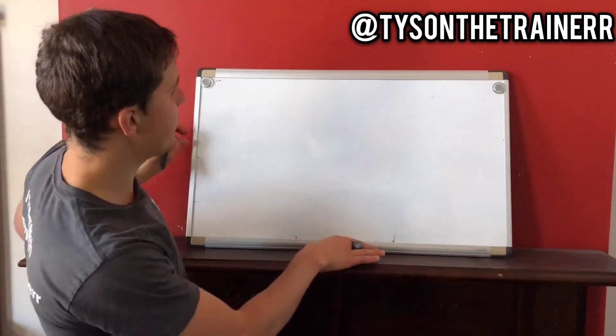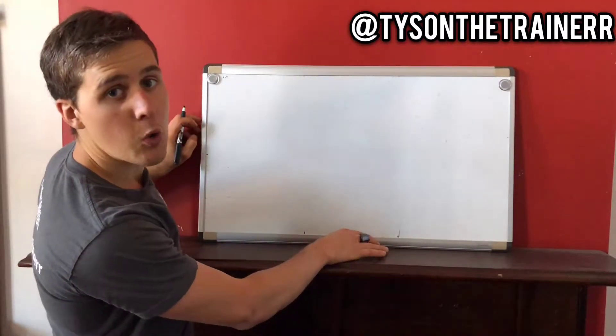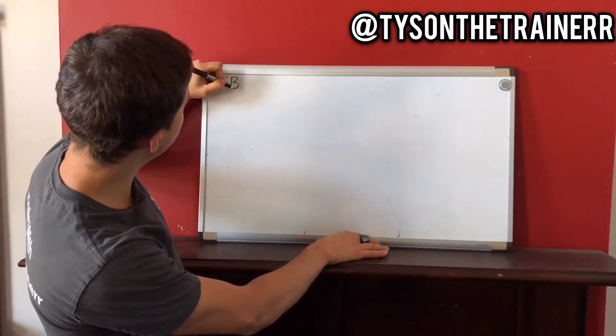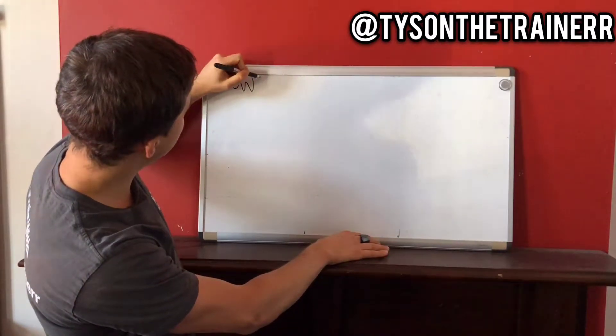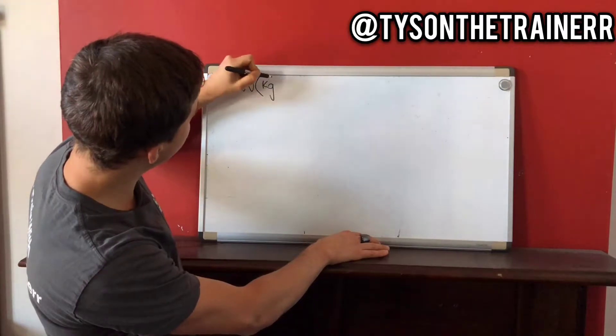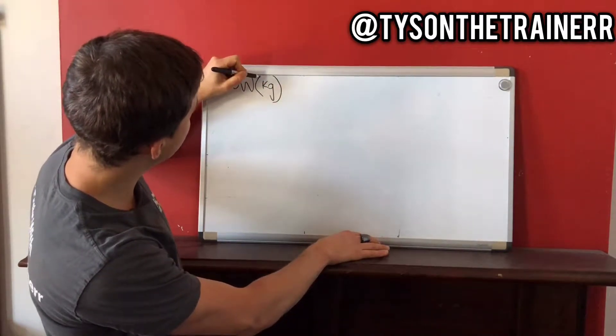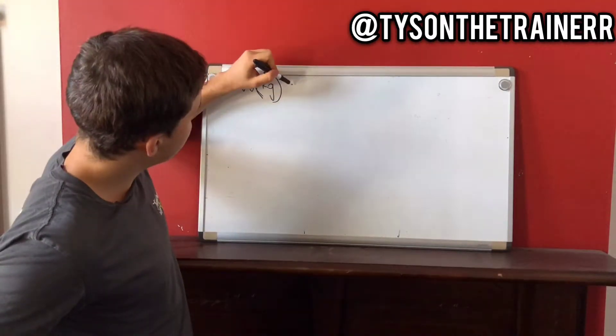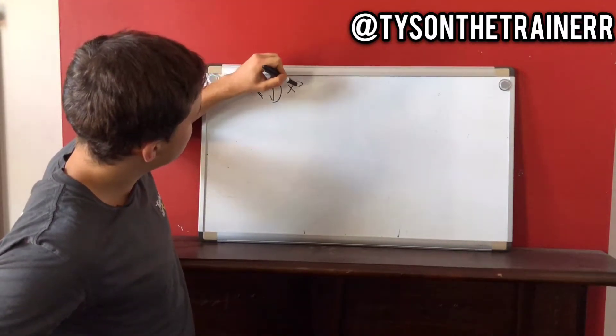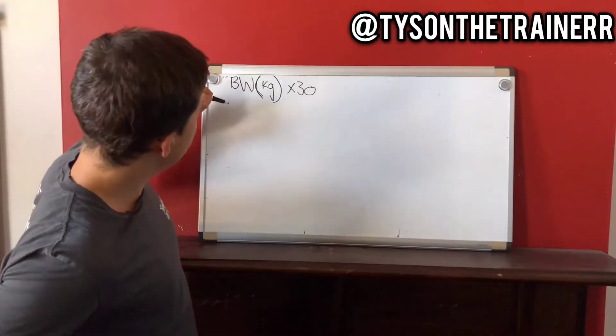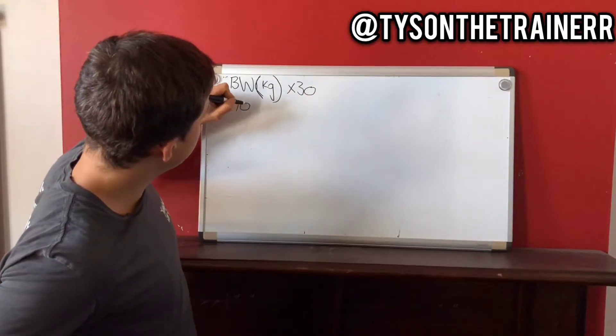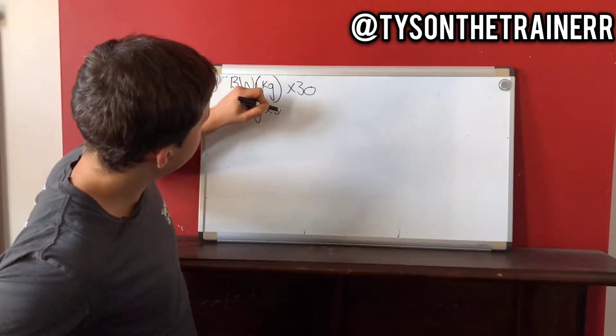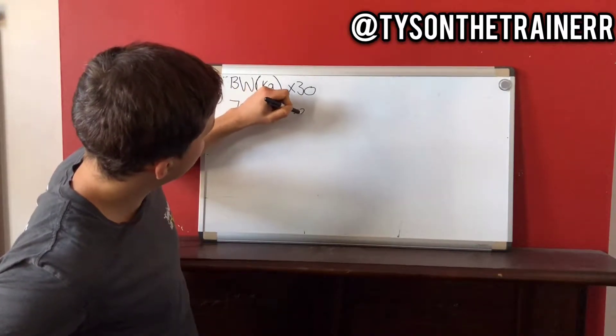So what we want to do first is figure out how many calories on average we're burning during the day. So all you want to do is you get your body weight in kilograms. So if you're in pounds, you divide it by 2.2. Now once you know your body weight in kilograms, you want to multiply that by 30. So in this example, let's say you're 70 kilograms.